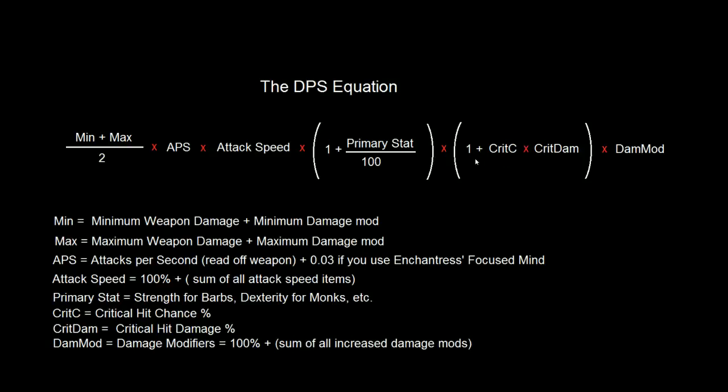And finally, we have the Damage Modifier. This is whenever you have an ability or a passive that's giving you an increased amount of damage. For example, if you're using a sword and you have Weapon Master, then you gain 15% increased damage. So in that case, Damage Mod would be 1.15, so 115% Damage Modifier.